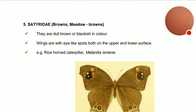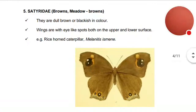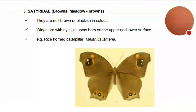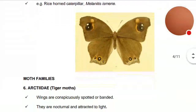Satyridae — the browns, meadow browns — are dull brown and may be blackish in color. The wings have eye-like spots on both the upper and lower surface. Example: rice horn caterpillar, Melanitis leda.